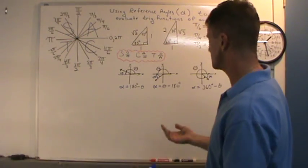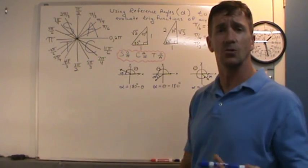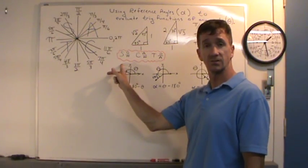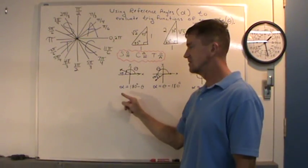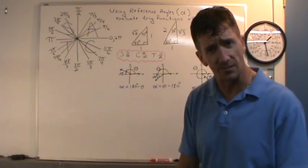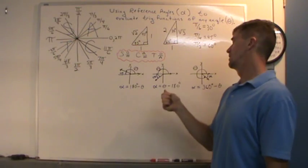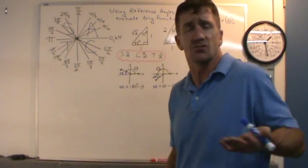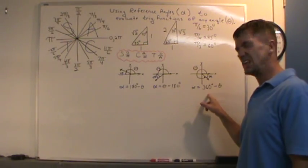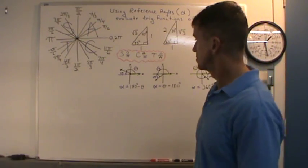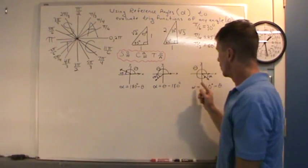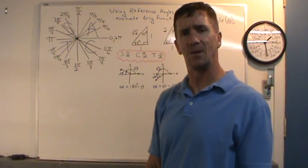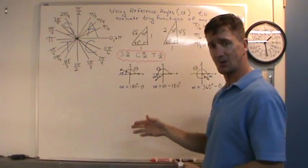Let's make sure you can find some reference angles. If theta is 120 degrees — that's an angle in the second quadrant — 180 minus 120 gives a reference angle of 60 degrees. If the angle is 225 degrees, that's in quadrant three: 225 minus 180 gives a reference angle of 45 degrees. If theta is 330 degrees, 360 minus 330 gives 30 degrees. For quadrant two or three you use 180; for quadrant four you use 360. You can also just use absolute value bars around 180 minus theta.